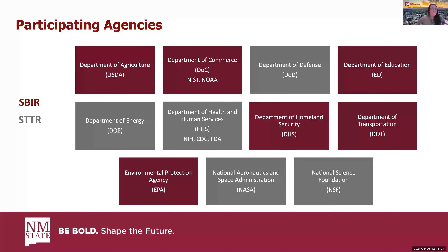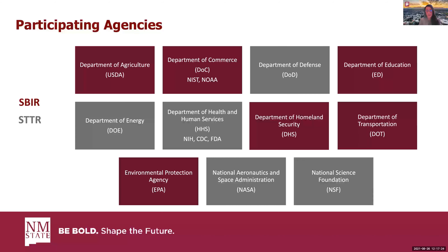The participating agencies — all of these participate in SBIR, and the gray boxes are the STTR agencies. You've got USDA; Department of Commerce, which has NIST and NOAA underneath it; Department of Defense, which is the biggest agency; Department of Education; Department of Energy; HHS, which is broader than just NIH and includes the CDC and FDA; Department of Homeland Security; Department of Transportation; the EPA; NASA; and NSF.